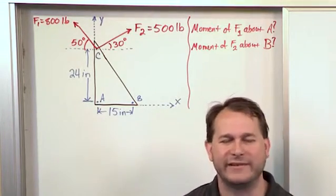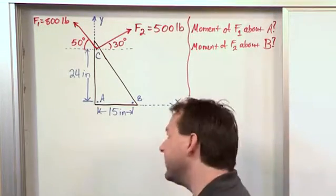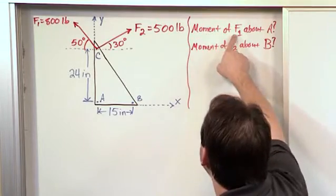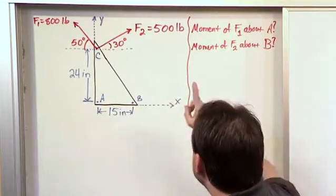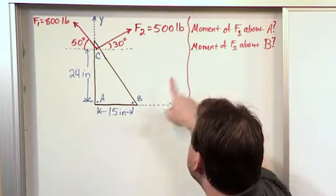The calculations are exactly the same as if you were dealing in newtons and meters—we're just mixing units up. Now we want to find two things: the moment of force F1 about point A, and separately, the moment of force F2 about point B.